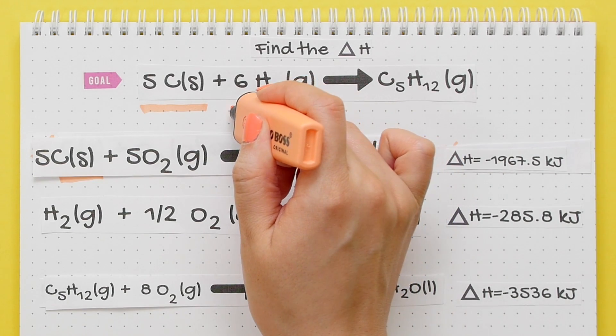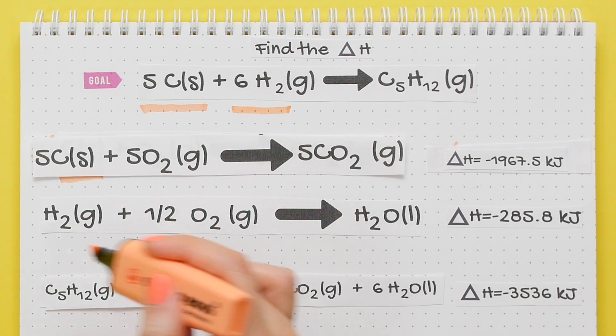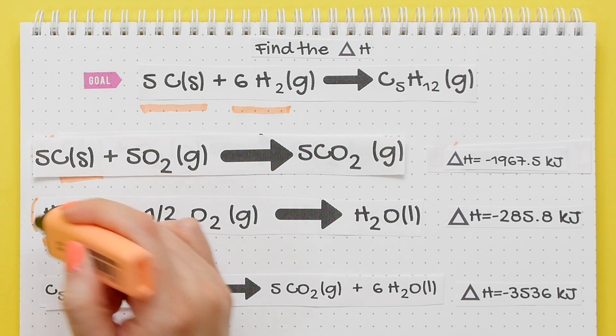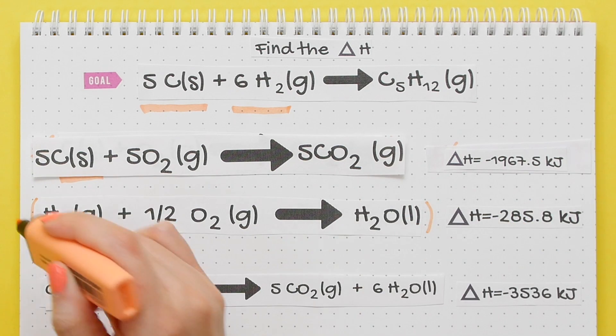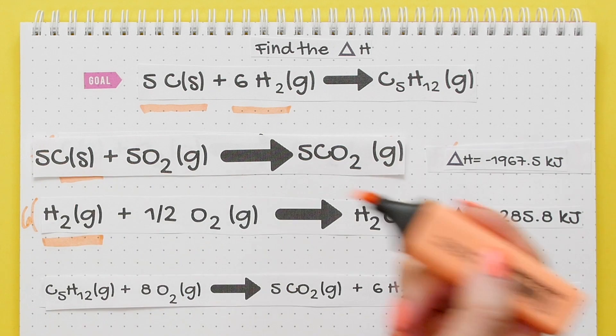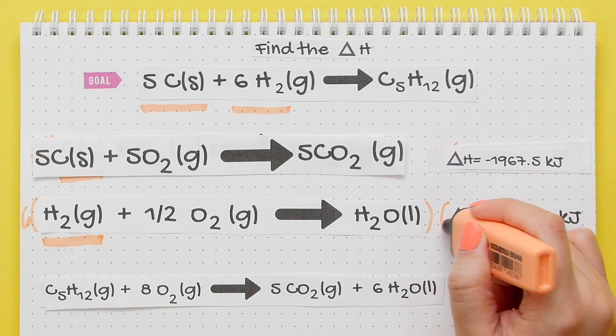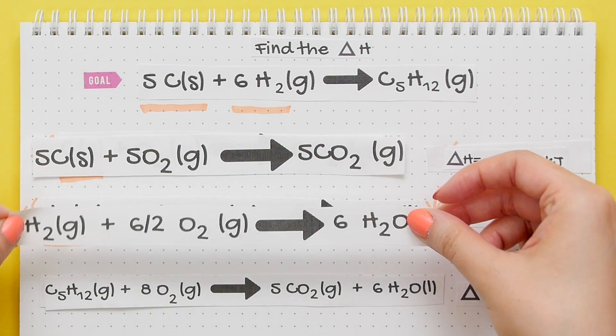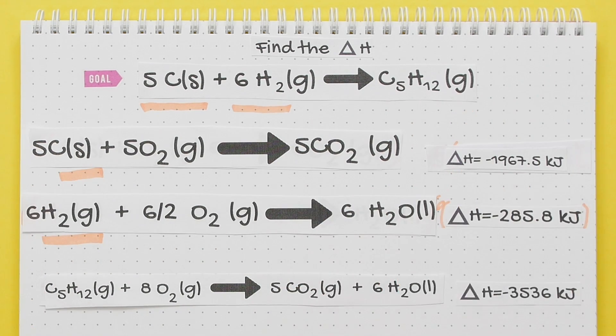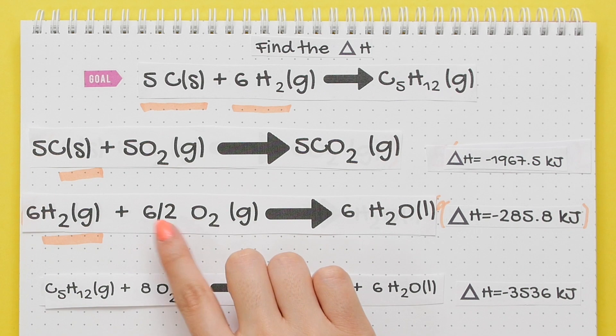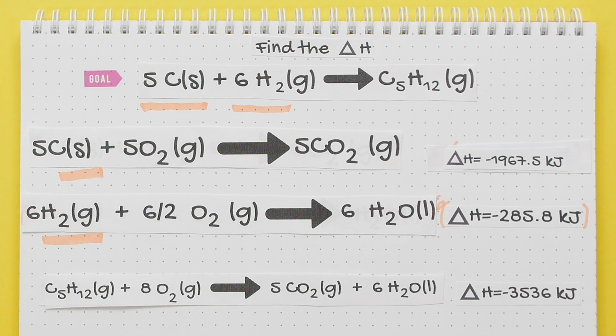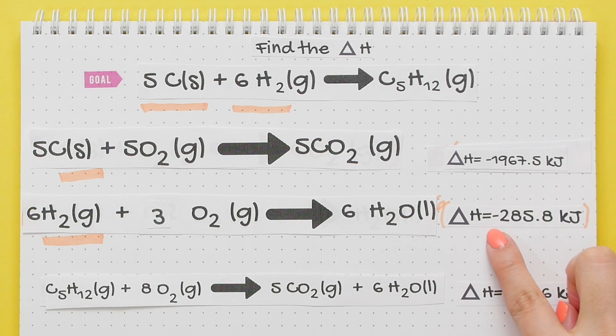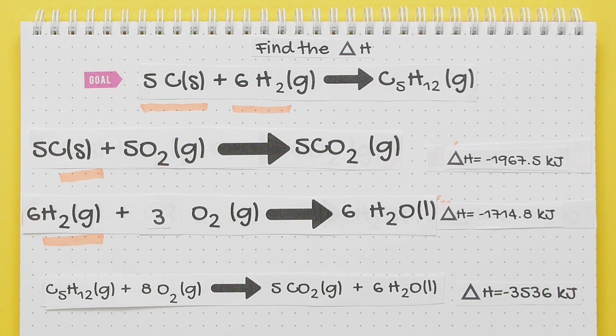Next, looking at our second reactant, let's see where H2 is. And though it is on the correct side, we need six H2s, so we will multiply the entire reaction by six and the enthalpy change by six as well. When we distribute the six to everything, we will get this new reaction. And when we multiply six times one half, you actually have six divided by two, which can reduce down to three. We'll multiply six times the enthalpy change and get this new value.